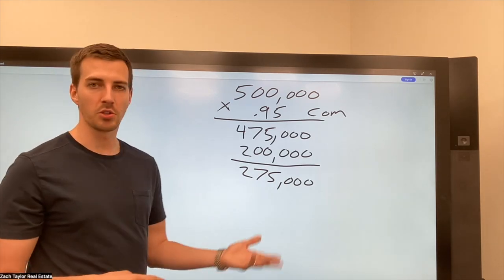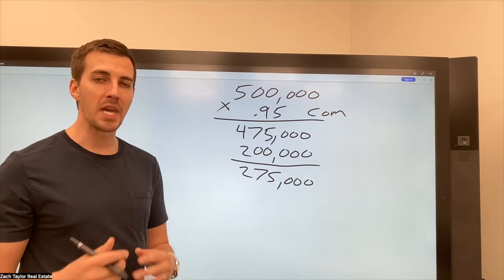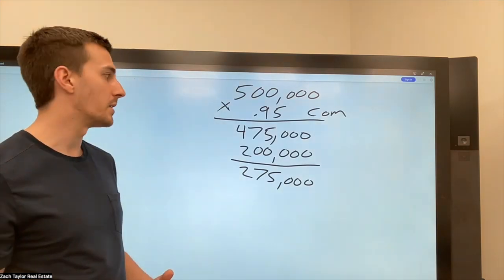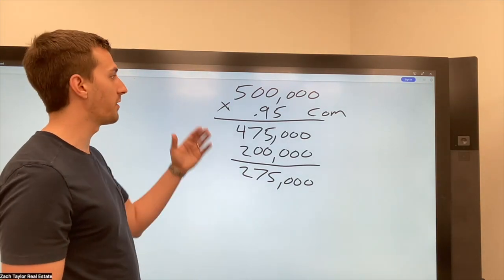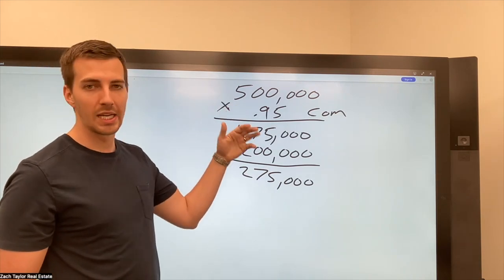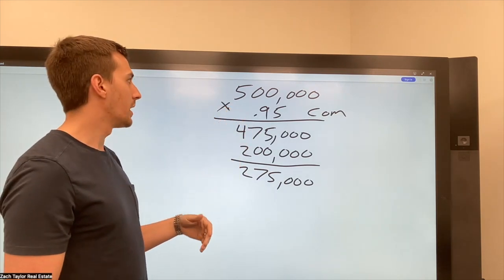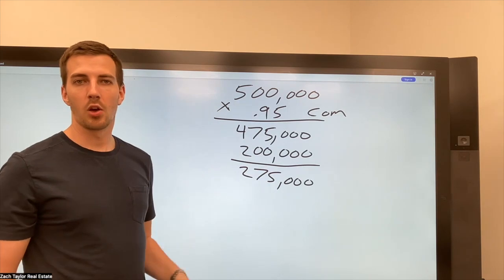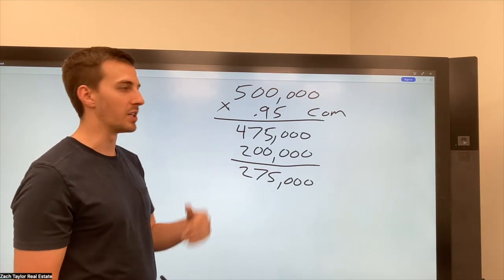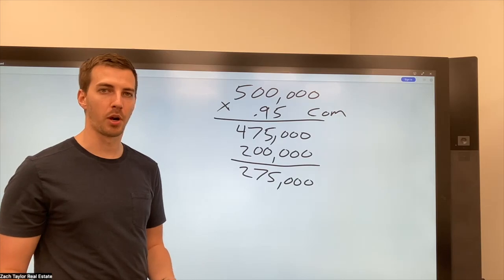There could be title insurance. So you'll want to make a relationship with a title company and just ask them, if I have a house for $500,000 in this neighborhood in Nashville, if it sells for that price, roughly what would be your closing costs when you have the deal? And they should give you a ballpark.